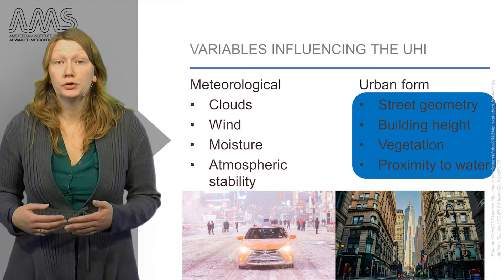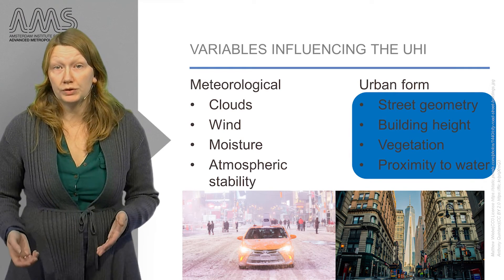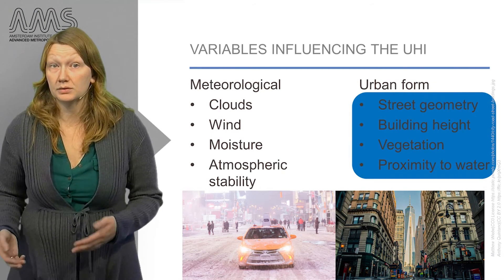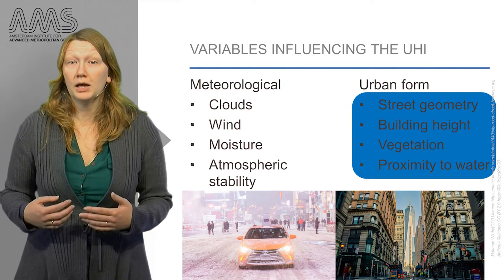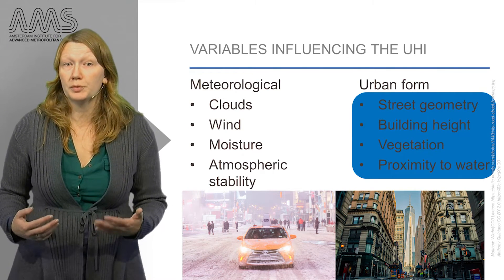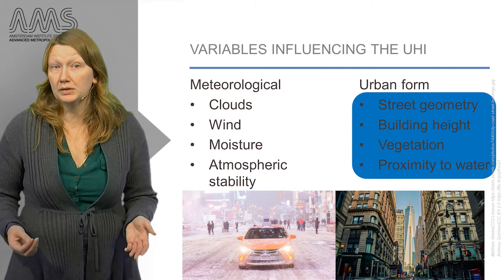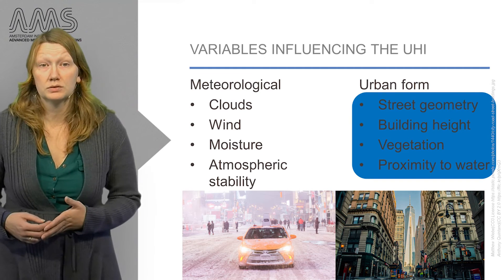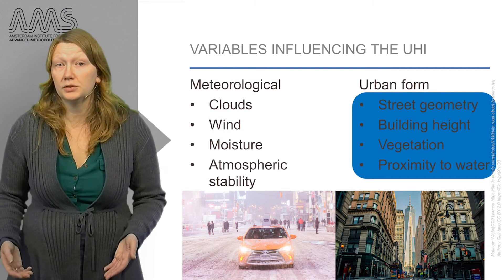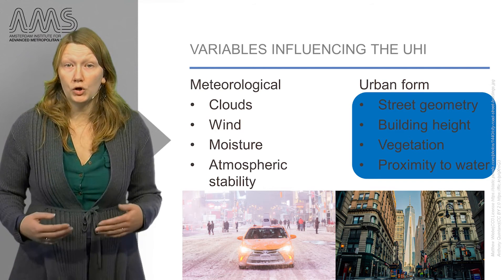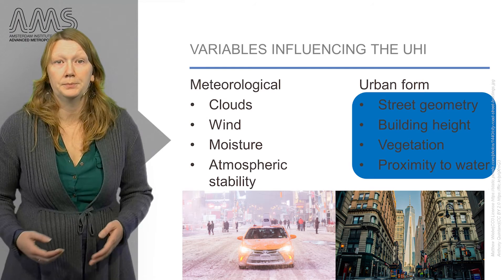Urban morphological properties also influence the strength of the urban heat island. More vegetation in the urban landscape will allow more energy to be used for evaporation, leaving less energy for warming of the atmosphere and the buildings. In addition, street geometry and the availability of open water surfaces also influence urban temperatures.